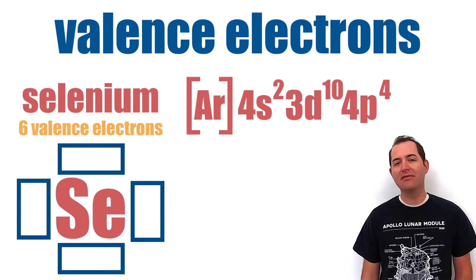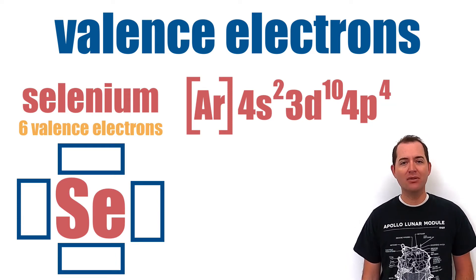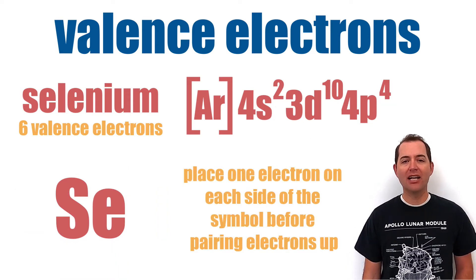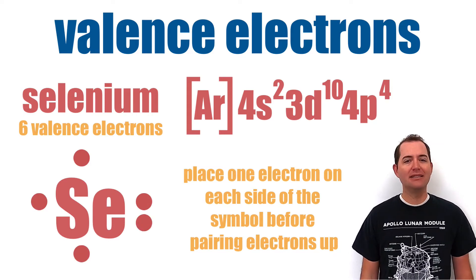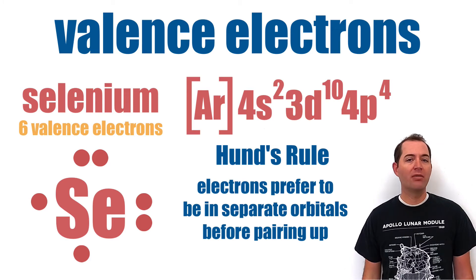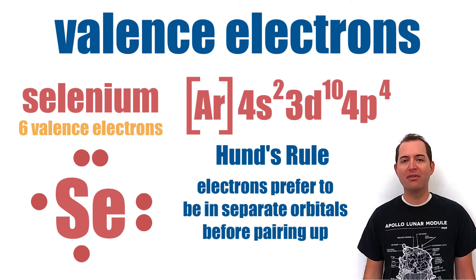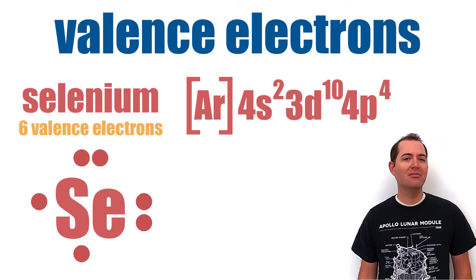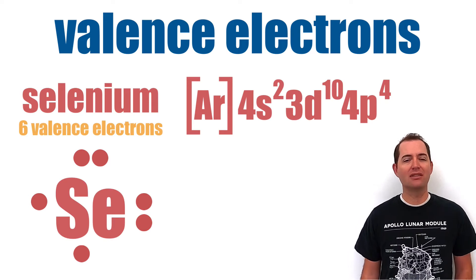When placing dots that represent valence electrons around a symbol, we place one on each side before pairing them up. This is done in part because of Hund's rule, which states that electrons prefer to be in separate orbitals before pairing up. This is a completed Lewis dot structure for selenium.